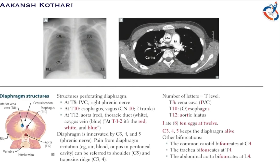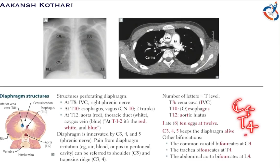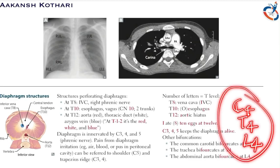Important bifurcation points to remember: the common carotid artery bifurcates at C4, the trachea bifurcates at T4, and the abdominal aorta bifurcates at L4.